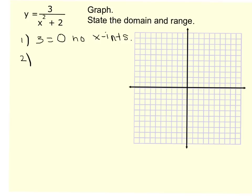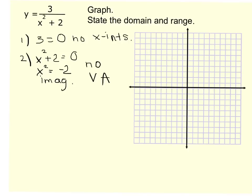The second step is to solve for vertical asymptotes by solving the denominator. Setting x² + 2 = 0 gives x² = -2, and taking the square root gives an imaginary number. Since I can't have imaginary asymptotes, there are no vertical asymptotes. For the last step, the degree on top is clearly 0, which is less than the degree on the bottom, so y = 0 is automatically the end behavior asymptote, which is horizontal.